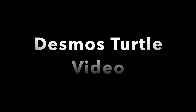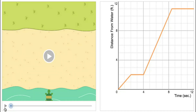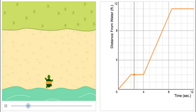The following example video is from the Desmos turtle activity many of you may recall from VC a couple of weeks ago. Watch how the graph models the relationship between the turtle and the distance he is from the water over a period of time.